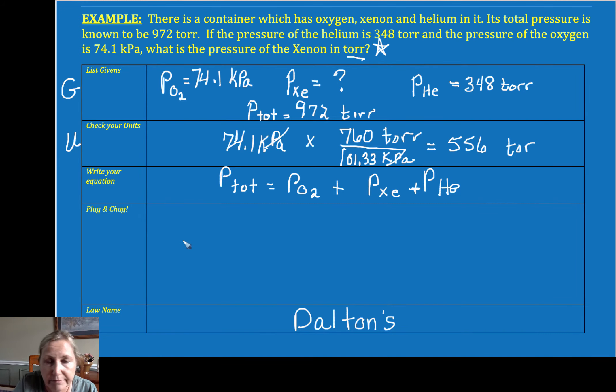So now I'm going to substitute. So we wrote our equation. We're going to substitute and we're going to solve. So I have 974. I'm not going to worry about units right now because I've already taken care of that. 556 plus my pressure of xenon plus my helium.